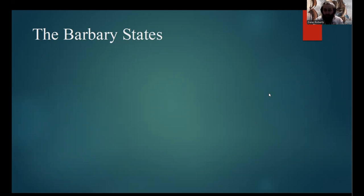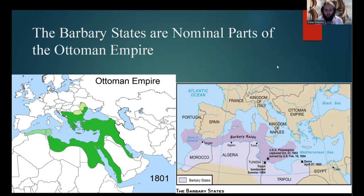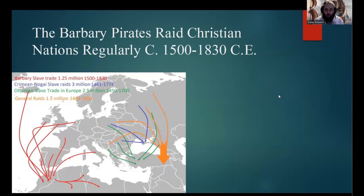First, we are going to talk about the Barbary States themselves. The Barbary States were essentially nominal parts of the Ottoman Empire — semi-independent city-states and protectorates that gave tribute to the Ottoman Empire but were generally self-governed. And because of that, the Barbary States generally had free reign of their military, and with their military, the Barbary States would actually send out pirates to raid various Christian nations regularly, starting roughly around 1500 and lasting up until 1830 CE. They would raid fairly far afield — all the way up to Iceland, the Netherlands, Denmark, Sweden, England, Ireland.